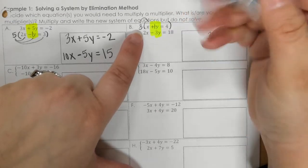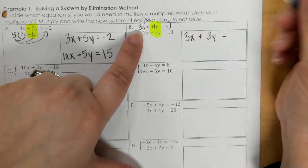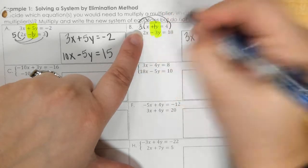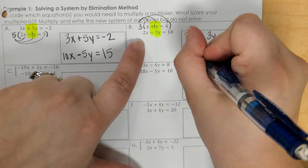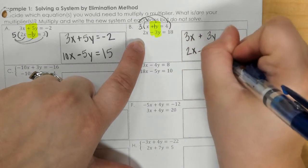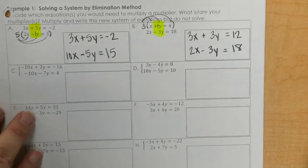So then I would do 3 times x, 3 times y, and 3 times 4. And then the bottom would stay the same.